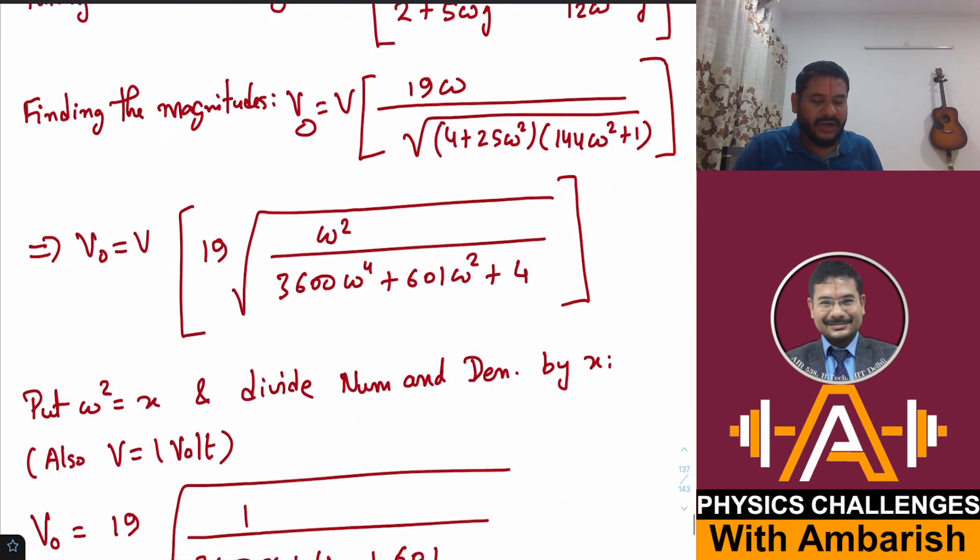Now this is a function of ω and you need to maximize this with respect to ω. The peak value of the generator voltage was 1 volt. This is V_o and I have substituted V₀ as 1 volt. This is V capital O and this is V small o.